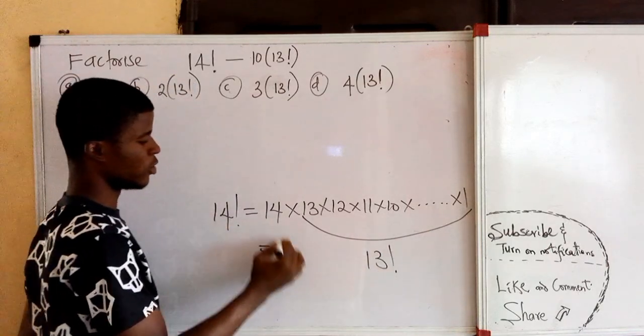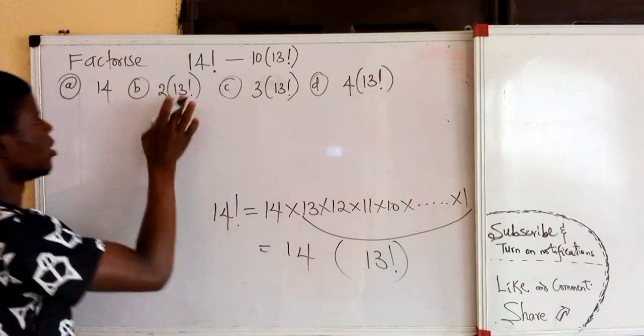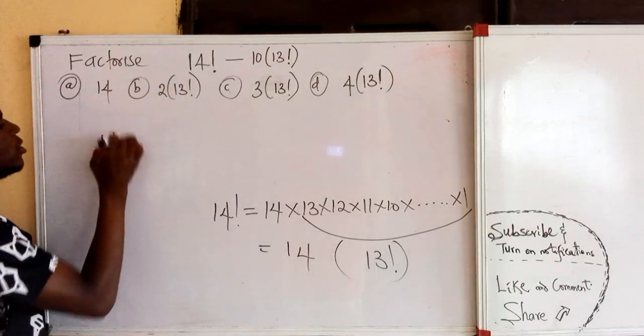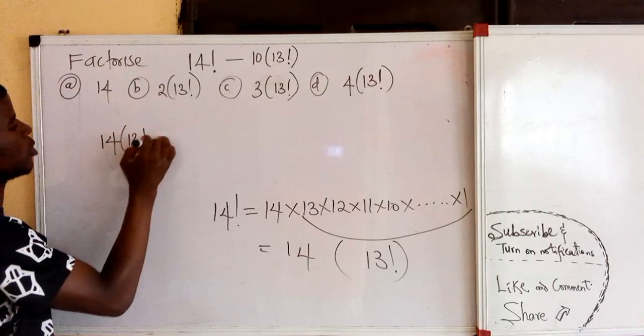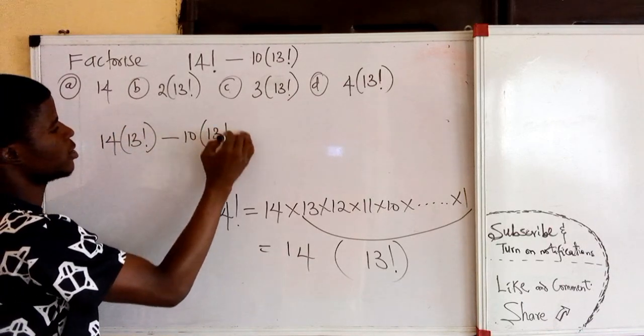So 14 factorial is equal to 14 times what? 13 factorial. So right here, this is 14 times 13 factorial minus 10 times what? 13 factorial.